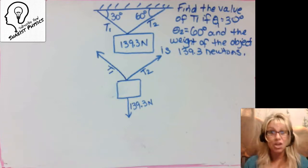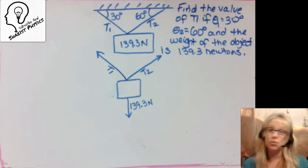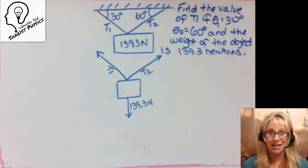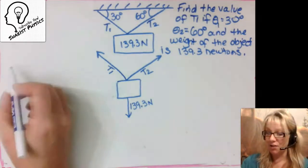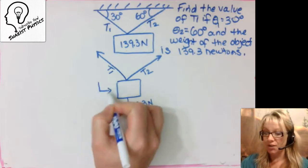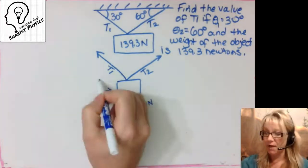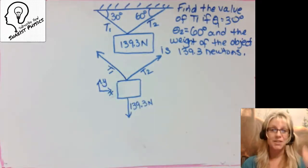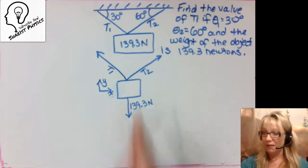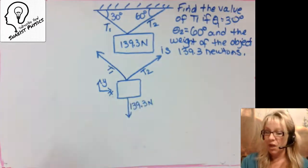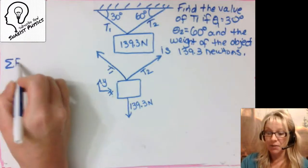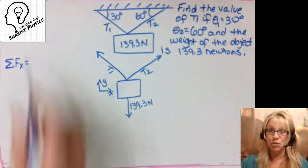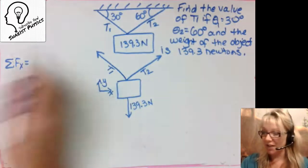That's the only thing touching the box — those are the only forces. Most important job is done: that free body diagram. Now our force summations in the x and y direction. We're going to use a standard axis, which says positive x is to the right and positive y is up. Now in these problems we do the same thing every single time.